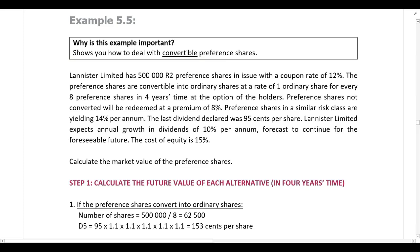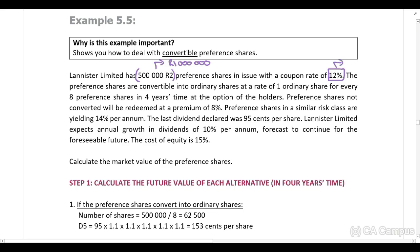Lannister Limited has 500,000 two-rand preferences in issue with a coupon rate of 12%. Having 500,000 two-rand preferences gives us a nominal value of one million rand. The coupon rate of 12% is used to calculate the dividend cash flow. The preferences are convertible, so we are dealing with a convertible preference share in this example.